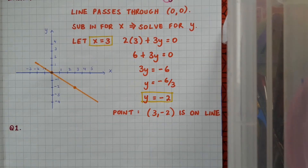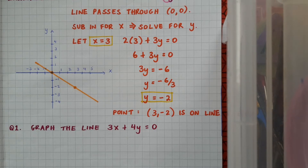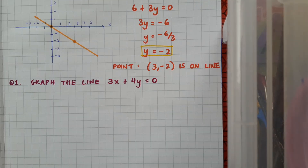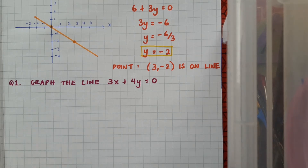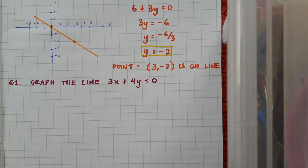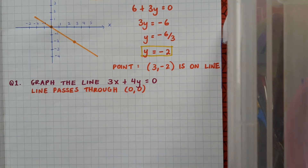Now a question for you: graph the line 3x plus 4y equals 0. Pause the video here while you do that, then play to see if you're correct. So let's run through the solution. This line is in the form ax plus by equals 0, so I straightaway know it goes through the point (0, 0). And now I need to find a second point.